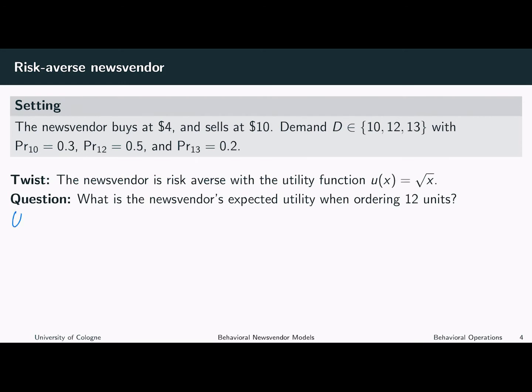The expected utility when ordering 12 units depends on the events that can occur. With a probability of 0.3, the demand is just 10 and we ordered 12 units. In this case, we will sell 10 units at a price of $10 each and we bought 12 units at a price of $4 each.